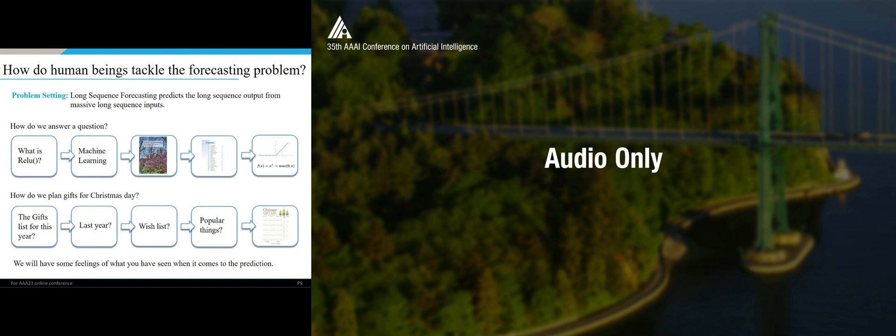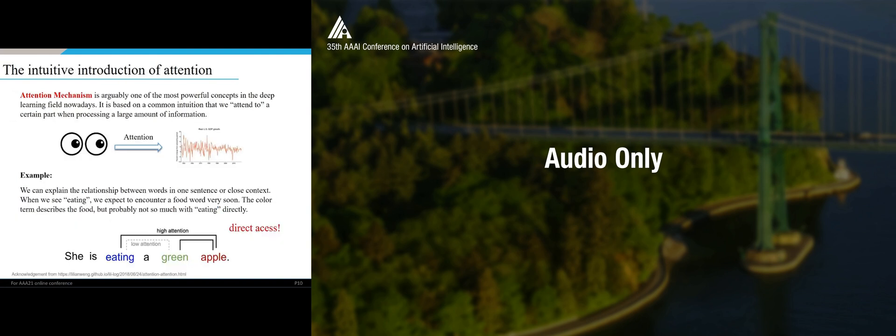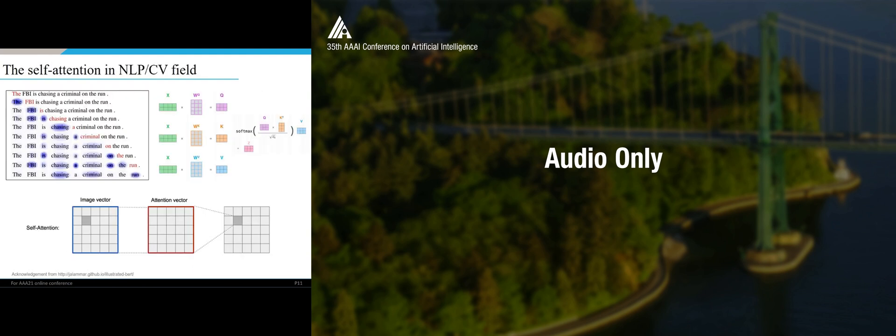We will have some feelings of what we have seen when it comes to predictions. That makes the attention mechanism, that is one of the most powerful concepts in deep learning field nowadays. If we see a time series like this, we are trying to find its redundant patterns, and we want to also see some specific period of time. If we see the following sentences, she is eating a green apple, the eating has higher attention on apple than the green. So the attention itself is building a direct access between different things, and it also helps make great success in both NLP and CV field.